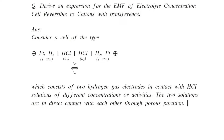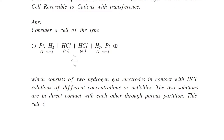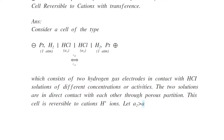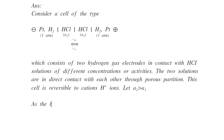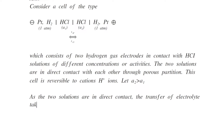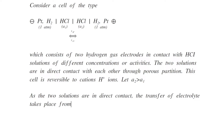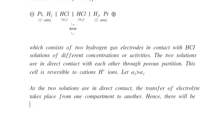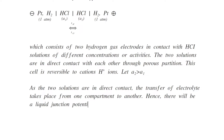This cell is reversible to cation, i.e. H⁺ ions. Let A2 be greater than A1. As the two solutions are in direct contact through a porous partition, the transfer of electrolyte takes place from one compartment to another. Hence, there will be a liquid junction potential.